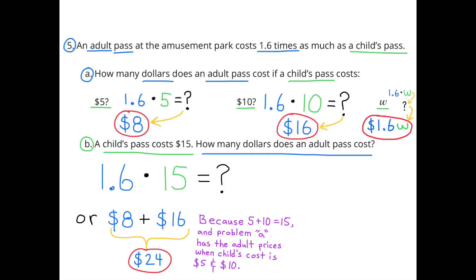Part b: A child's pass costs $15 — how many dollars does an adult pass cost? We can use the answers from part a: a $5 child's pass and a $10 child's pass together total $15. Adding the adult prices, 8 plus 16 gives us $24. We can also do 1.6 times $15 and get $24. So when the child's pass costs $15, the adult's pass costs $24.